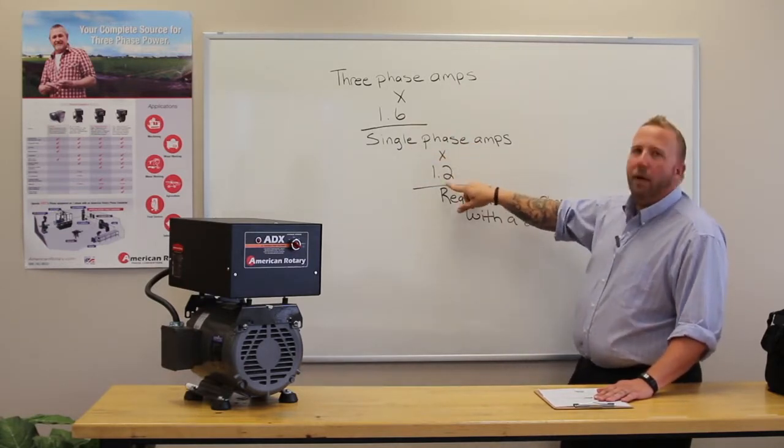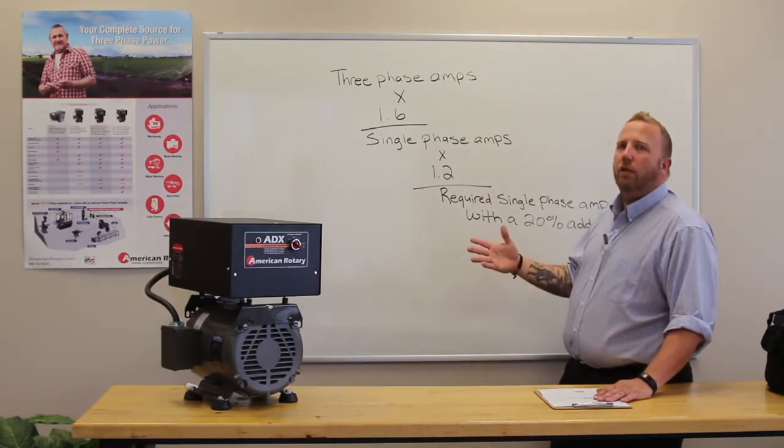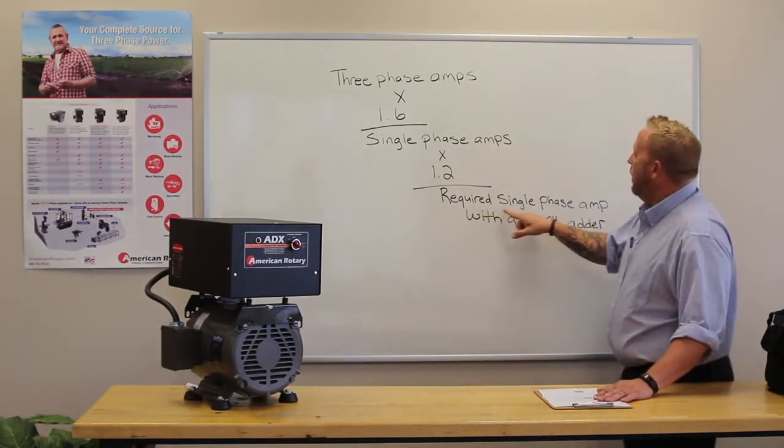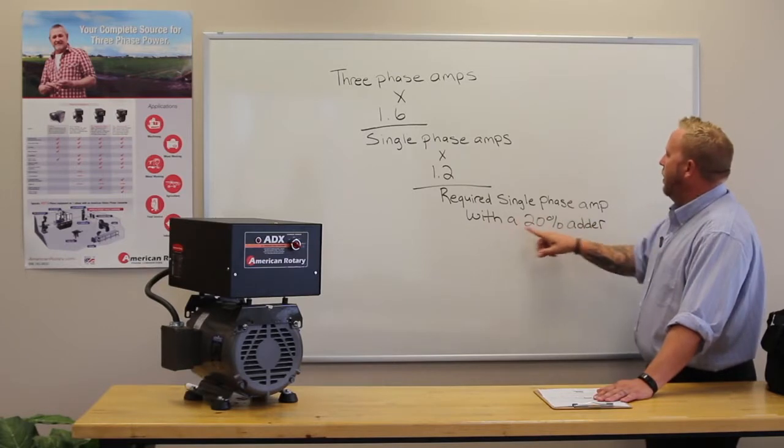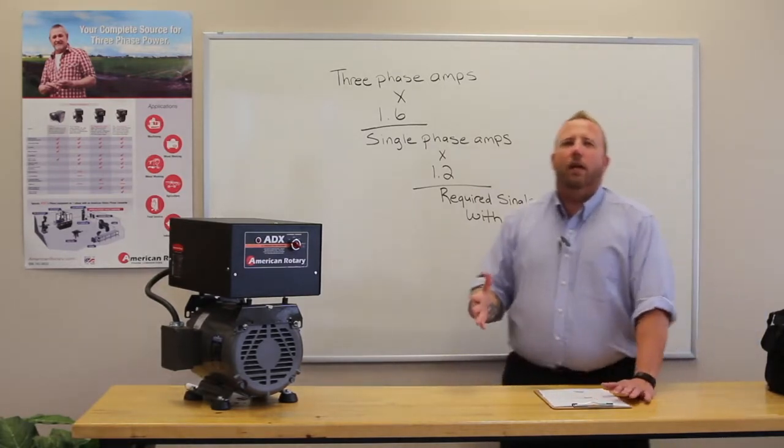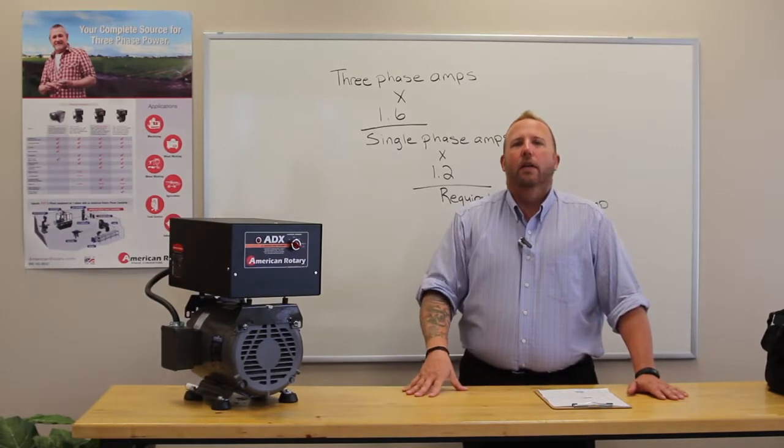You multiply that by 1.2, that's 20% above what your load is, and you're going to get your required single phase amps with a 20% adder. Why do we calculate in that 20% adder, you ask?